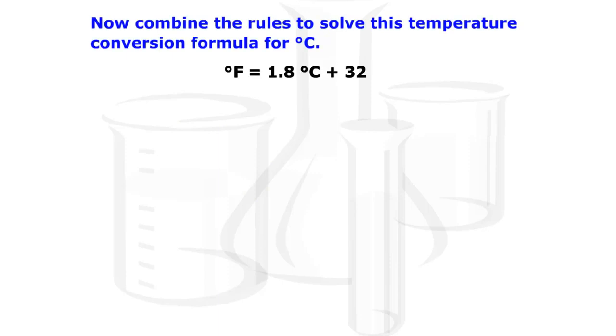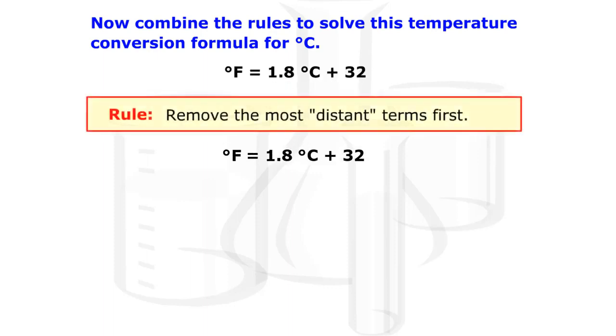Now combine the rules to solve this temperature conversion formula for degrees Celsius: degrees Fahrenheit equals 1.8 times degrees Celsius plus 32. Rule: Remove the most distant terms first. In this case, the added term plus 32 is farther away from the degrees Celsius, so remove it first.